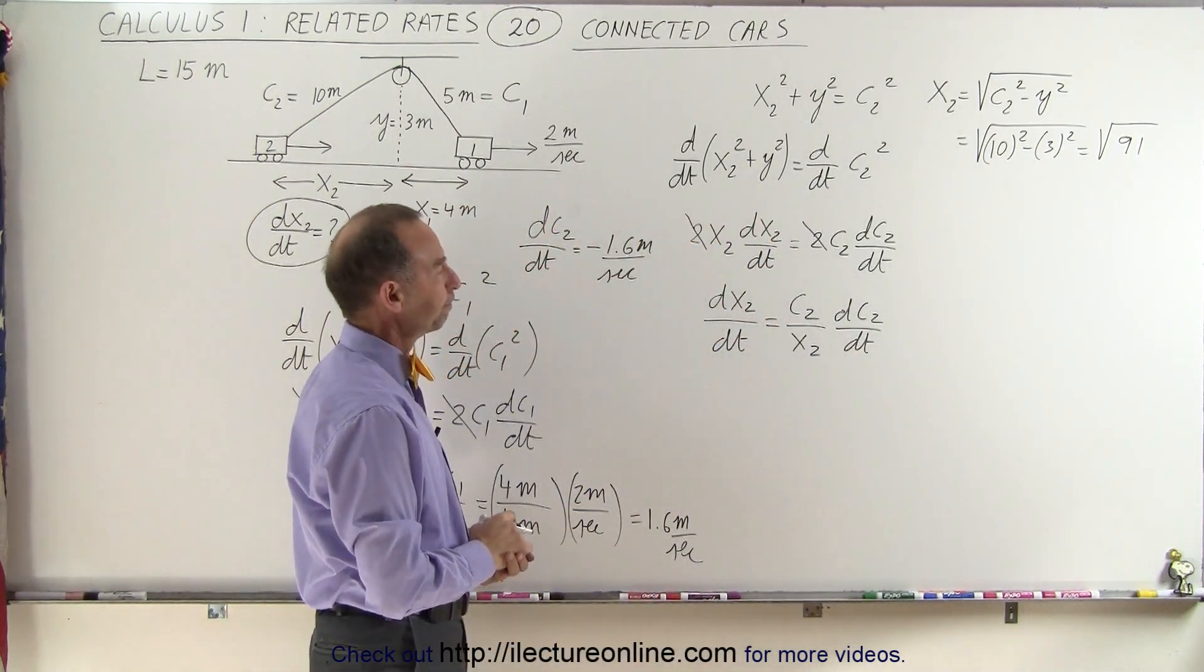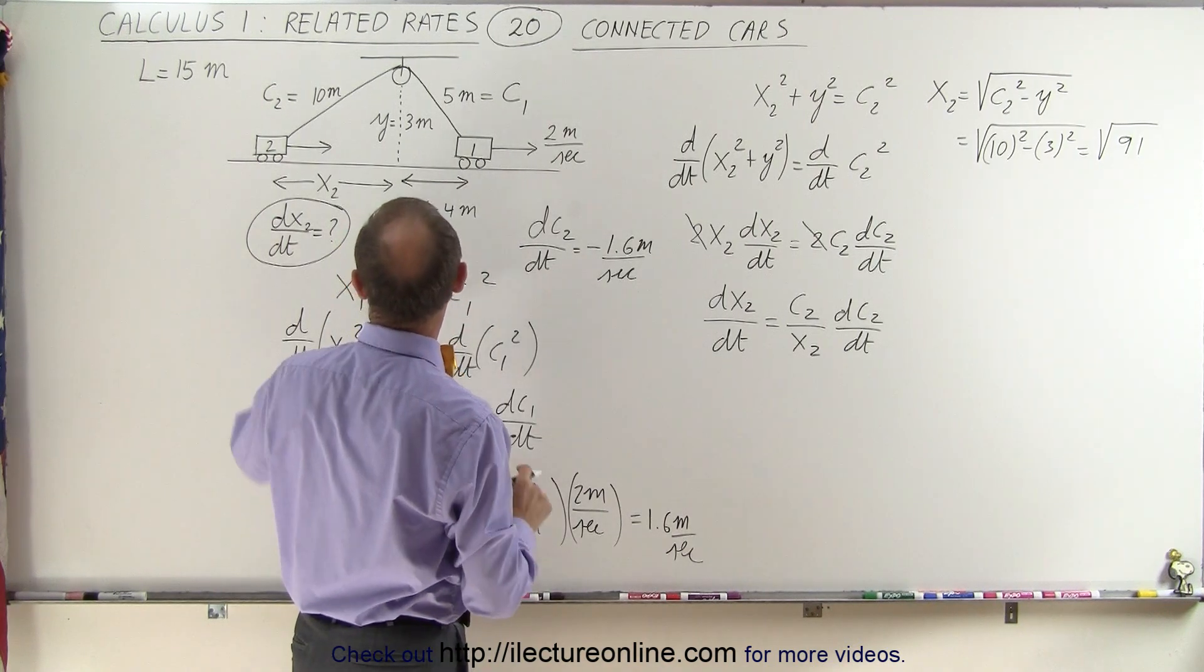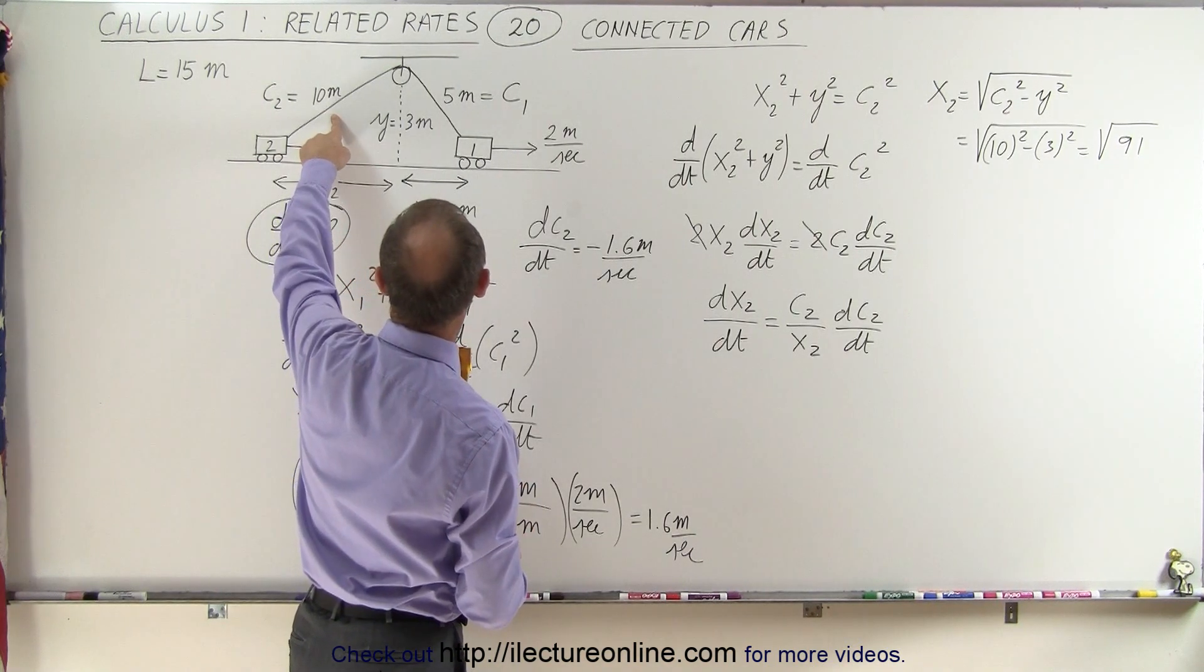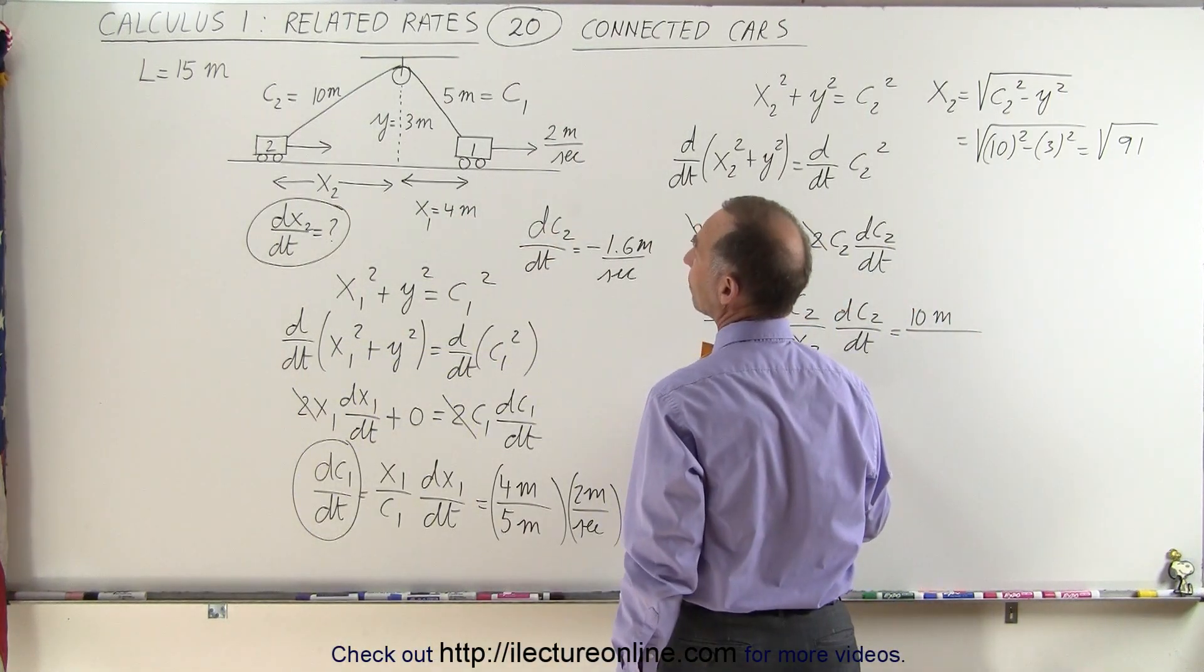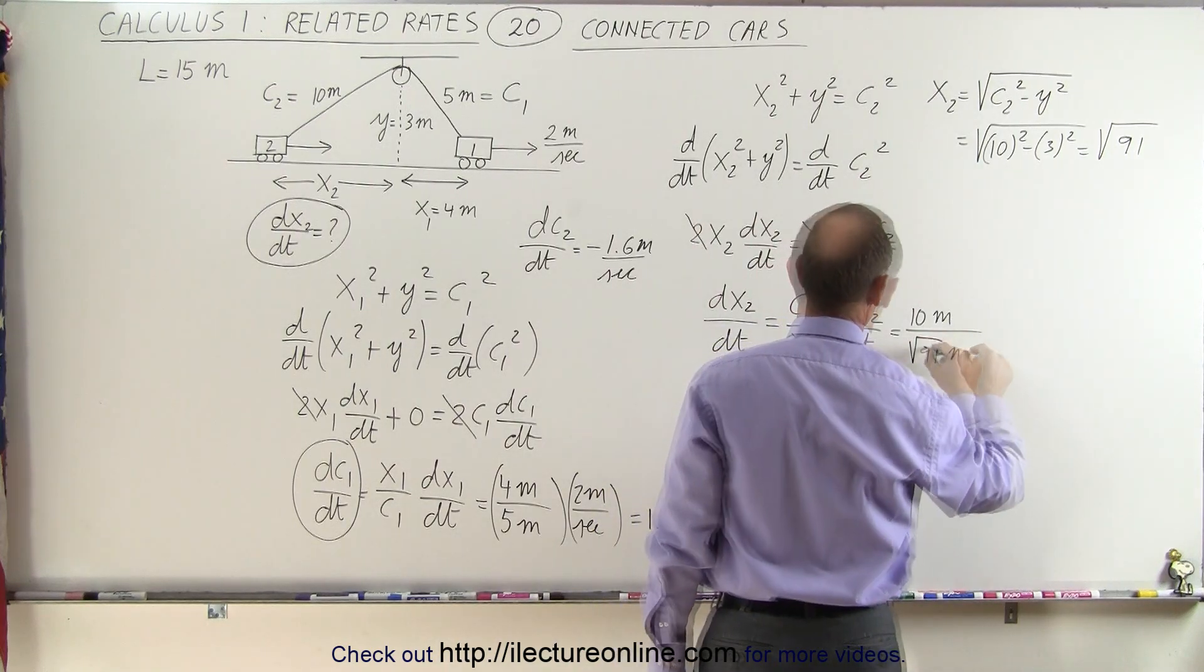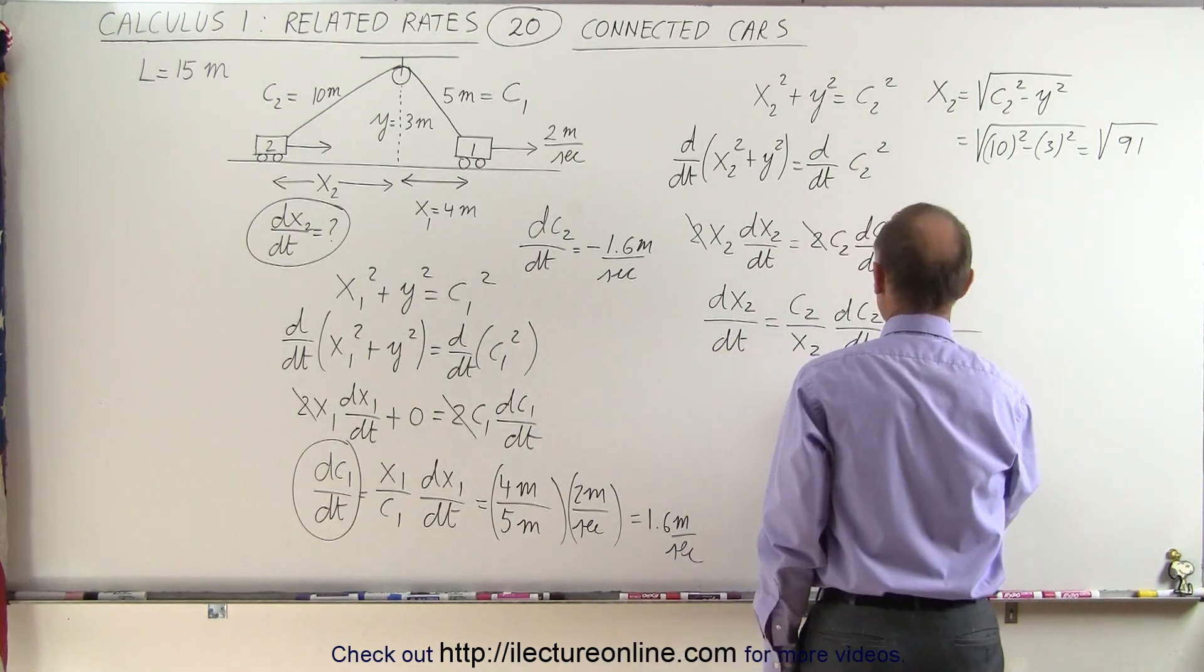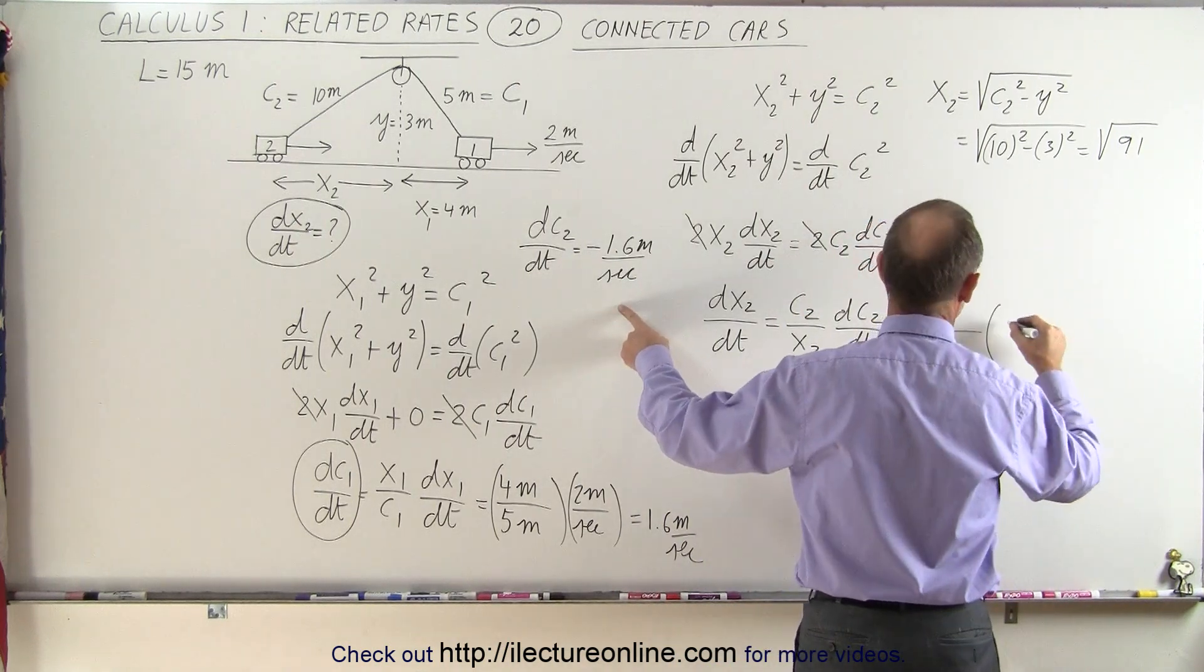All right. So what do we have here? c2 is 10 meters. And x2 is the square root of 91 meters. And dc2 dt was going to be equal to a negative 1.6 meters per second.